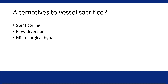In this case, alternatives to left vertebral artery sacrifice include stent coiling, flow diversion, and microsurgical bypass. The first two options were not felt to be viable given the tight inflow and outflow stenosis relative to the pseudoaneurysm.